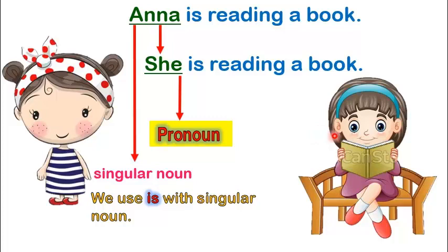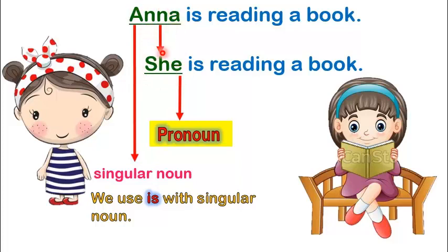This is Anna. Anna is reading a book. We can also say, she is reading a book. She refers to Anna. So, she is the pronoun that can be used for a female noun.